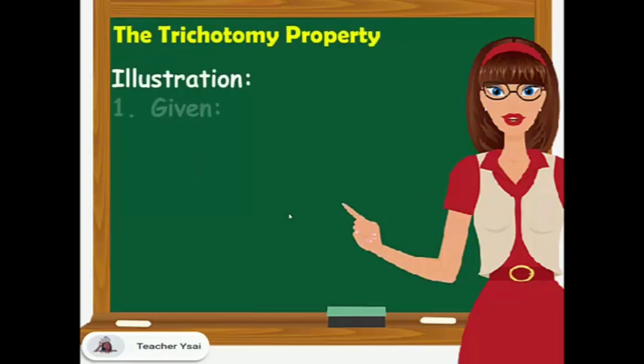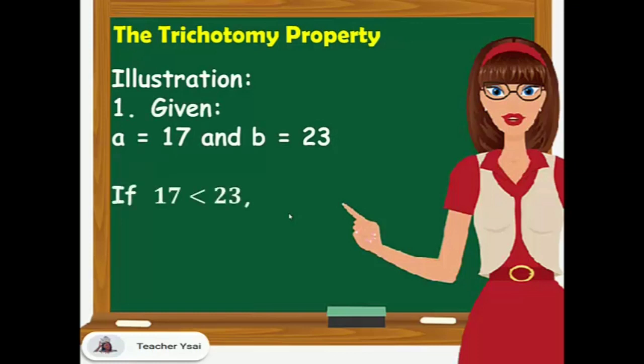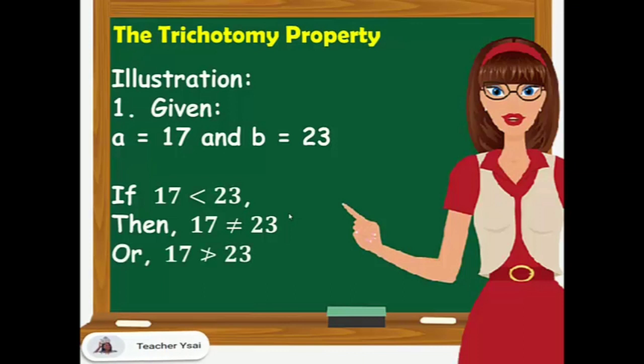For example, given A equals 17 and B equals 23: if 17 is lesser than 23, then we can say that 17 is not equal to 23, or 17 is not greater than 23.